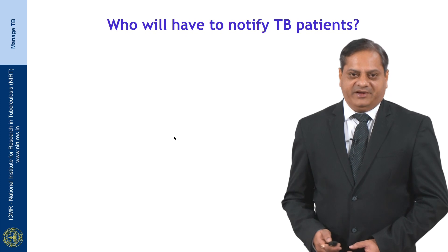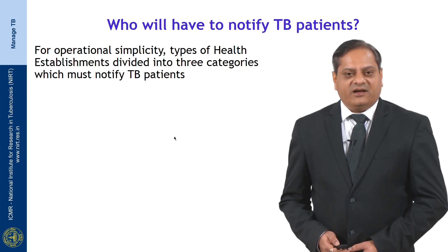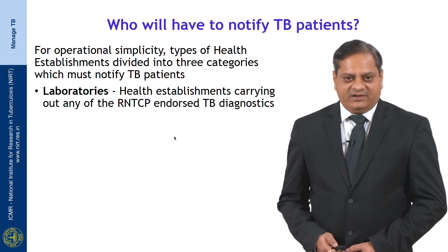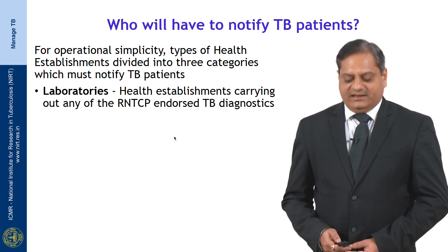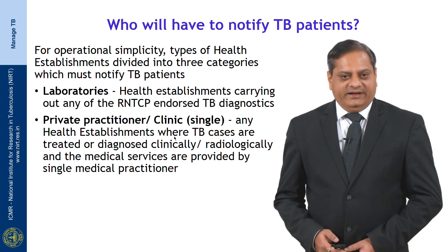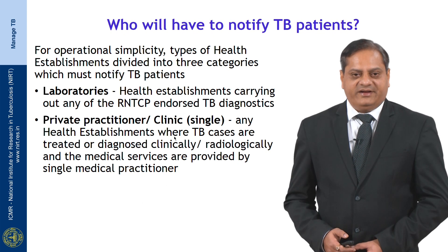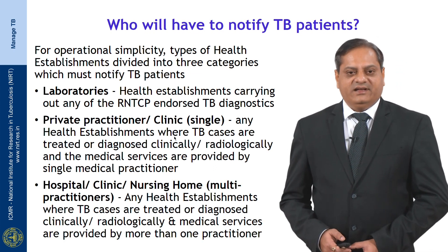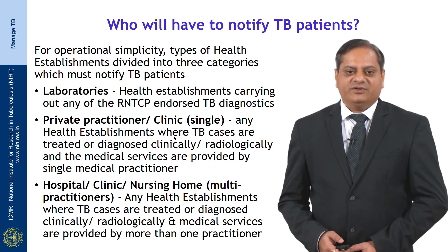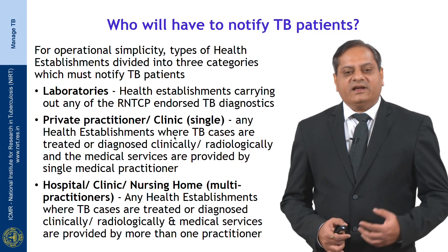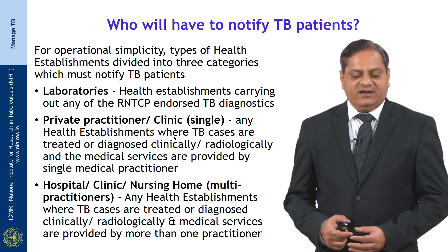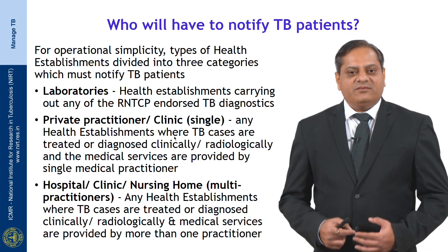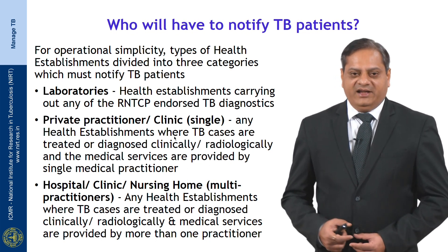Who is expected to notify TB patients? For operational purposes, health establishments are divided into three categories. First, laboratories — where RNTCP-endorsed diagnostics take place and TB patients are diagnosed. Second, private practitioners or clinics — single health establishments where a TB patient is treated or diagnosed clinically or radiologically, with medical services provided by a single medical practitioner. Third, hospitals, clinics, or nursing homes — multi-practitioner establishments where more than one treating physician is diagnosing or treating patients. The operational reason is that the district TB officer must deal with more than one doctor in multi-practitioner hospitals.